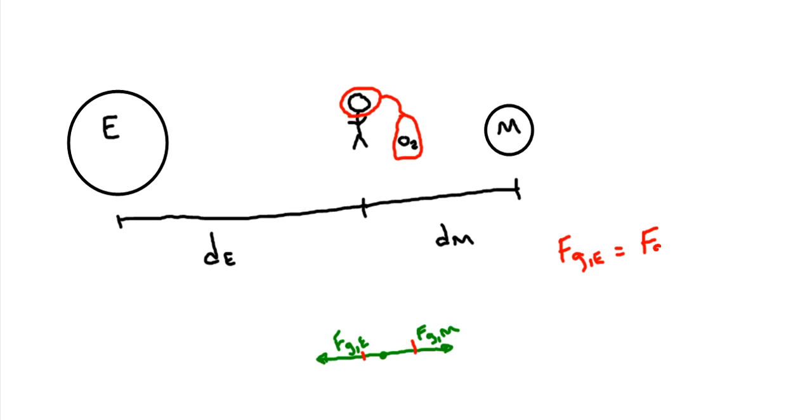Using Newton's universal law of gravitation, that says F_grav is equal to gravitational constant times m1 times m2 divided by the distance between them squared.